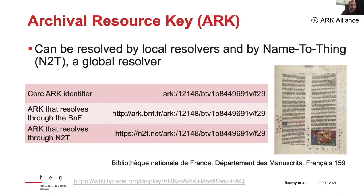If you start assigning ARCs, you can set up your own local resolver, which will also benefit from Name to Thing (N2T), which is a global resolver. On the table, you can see an example of the same identifier from the French National Library. This manuscript identifier not only points to the entire document, but to a particular page of this digitization — specifically to folio number 29.